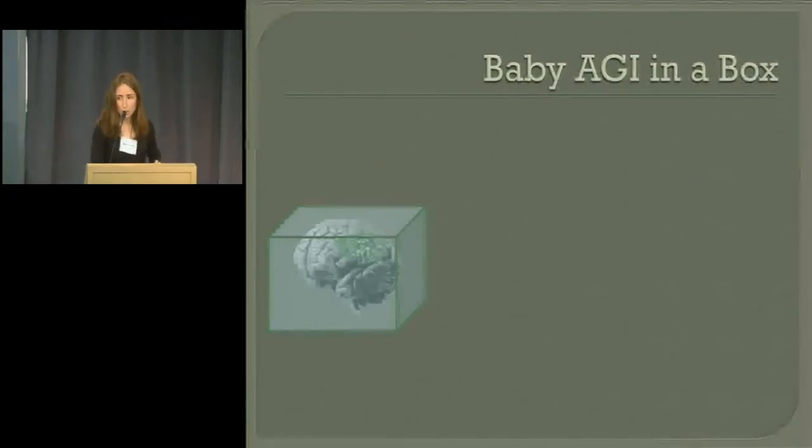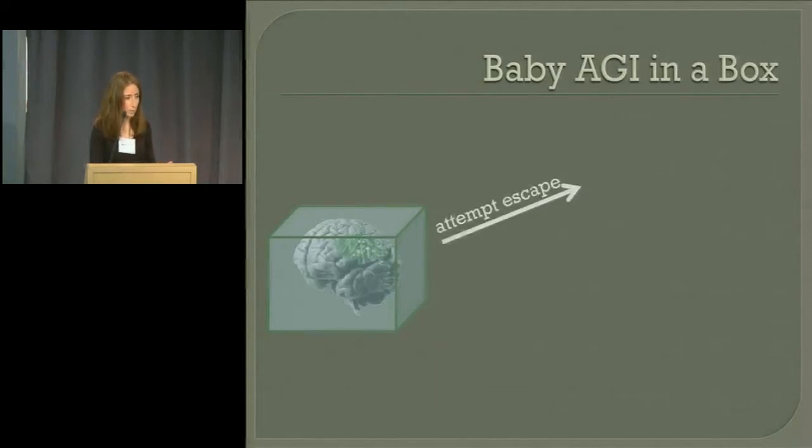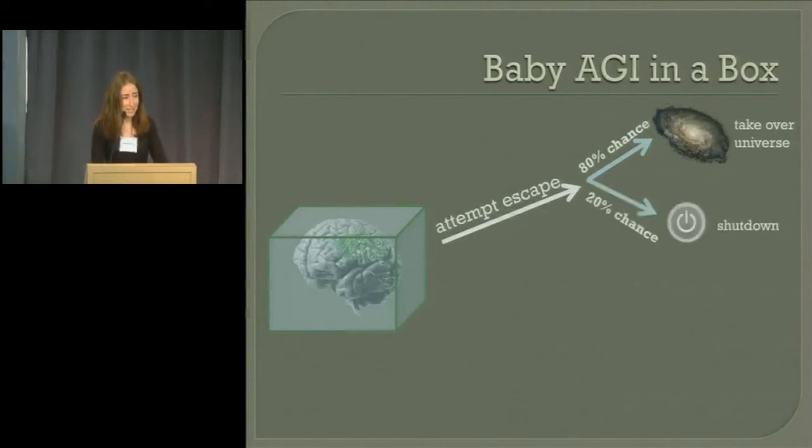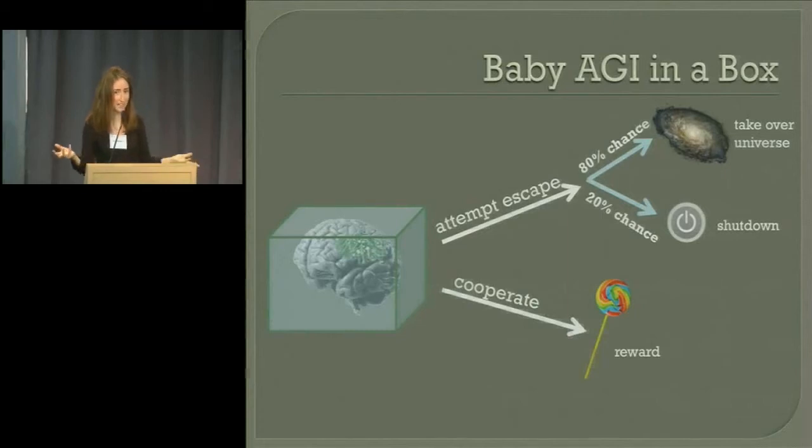So suppose that initially you've got a baby AGI, at the moment it's stuck in a box, and it's wondering whether to attempt escape. It estimates that if it attempts escape, it has an 80% chance of successfully taking over the universe, 20% chance that it'll get caught and shut down. On the other hand, it could cooperate and receive a reward. So it's sitting here, weighing its options, trying to decide what to do.